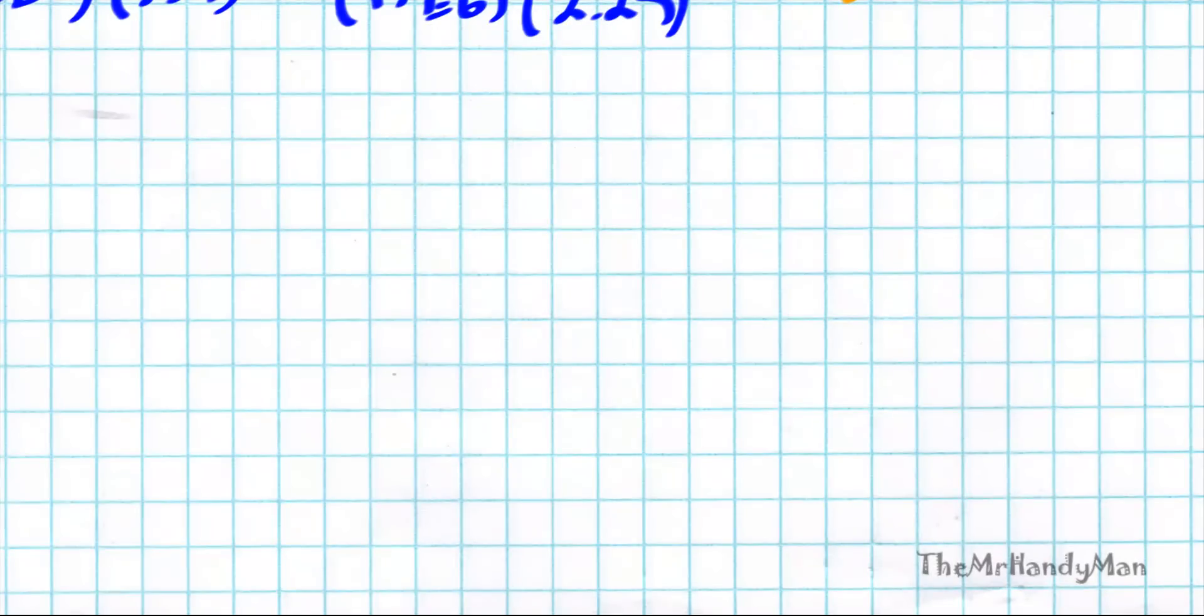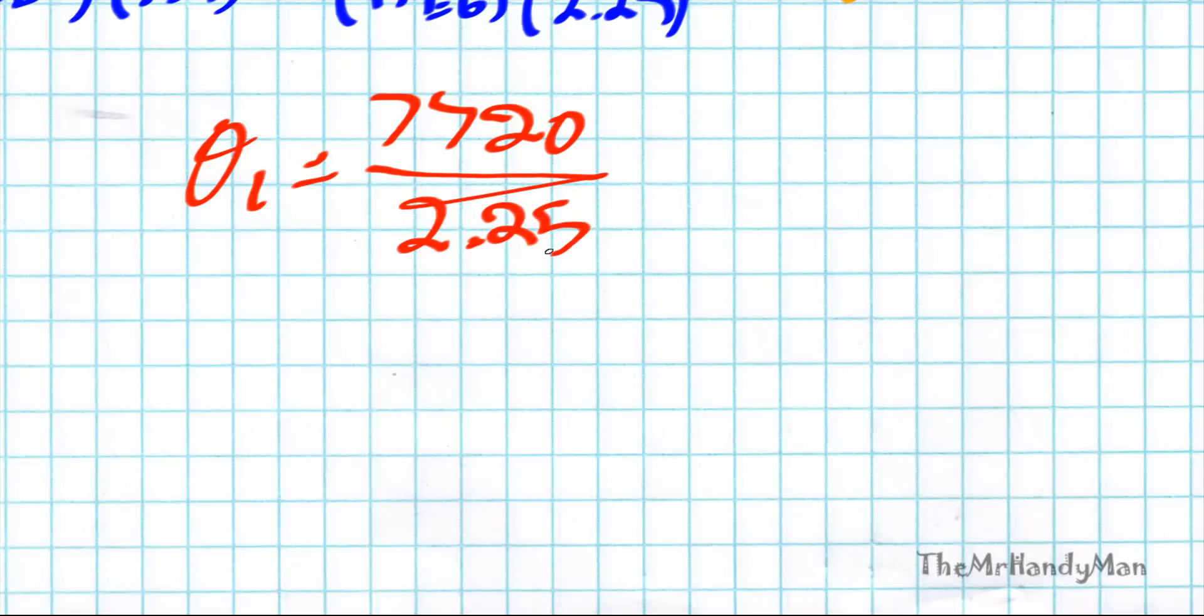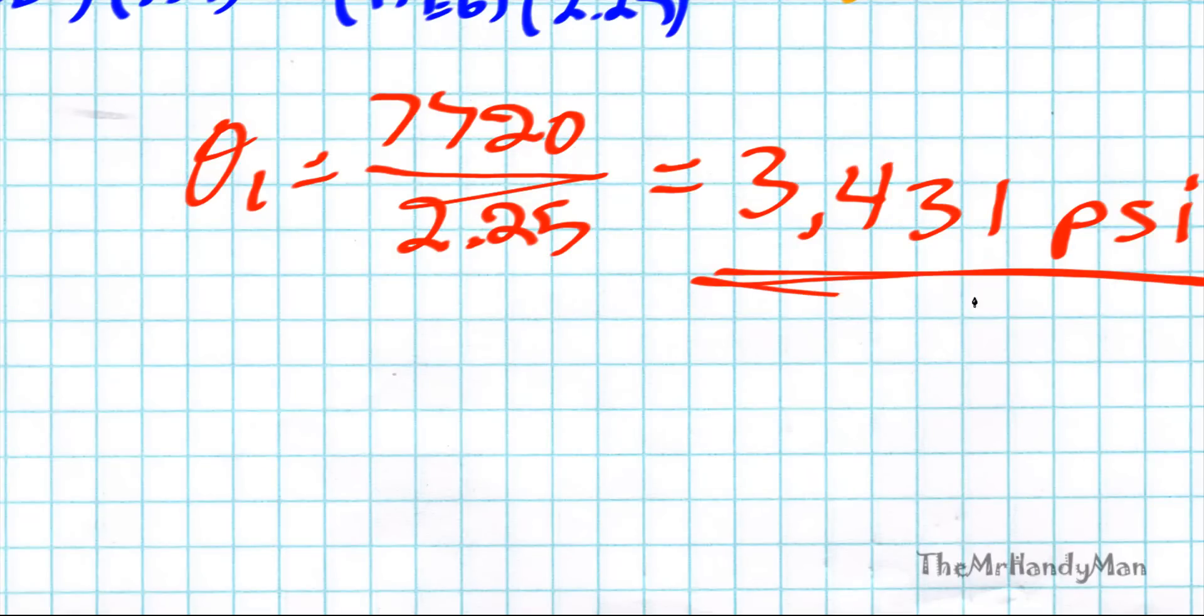So using those numbers that we just determined, the stress of copper is going to equal seven thousand seven hundred and twenty pounds over the cross sectional area two point two five inches squared, which equals three thousand four hundred and thirty one PSI.